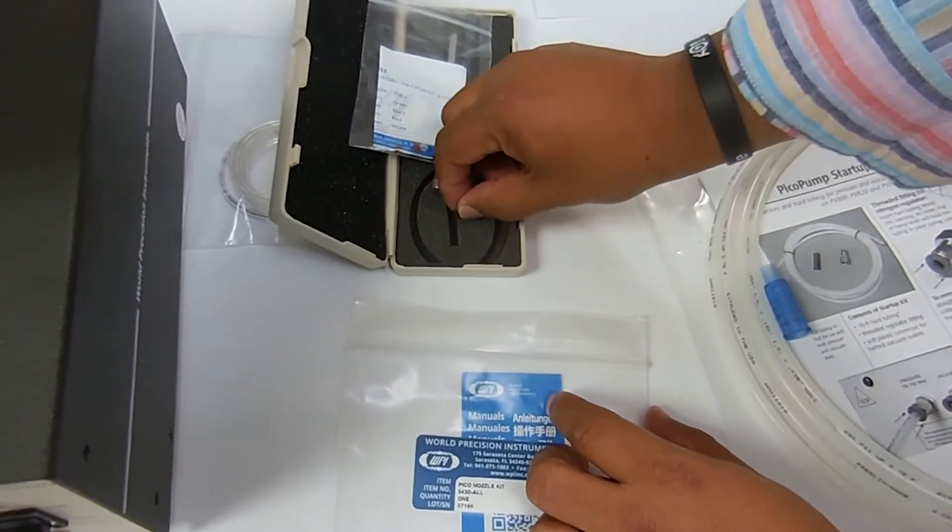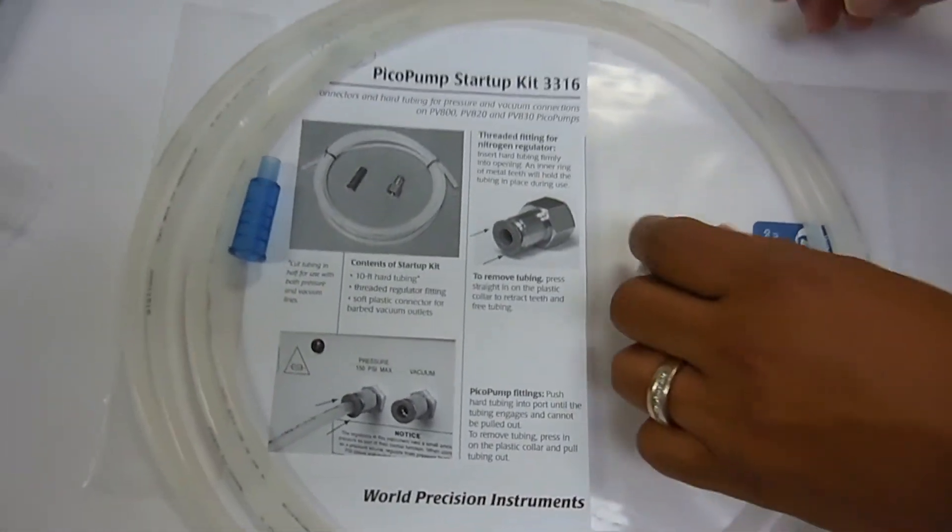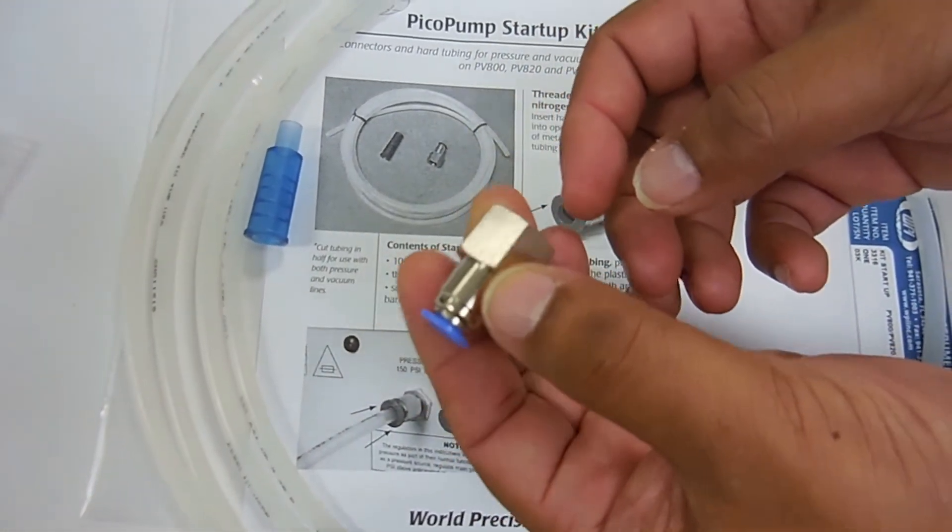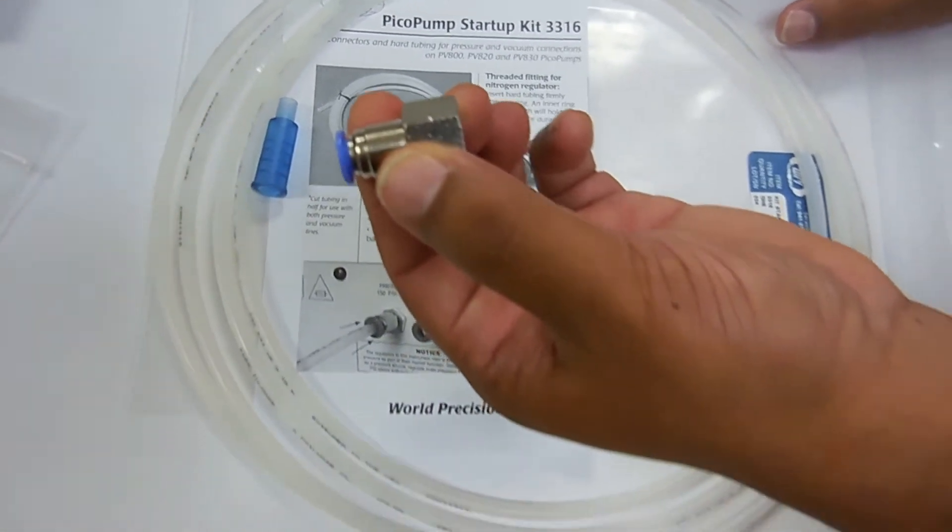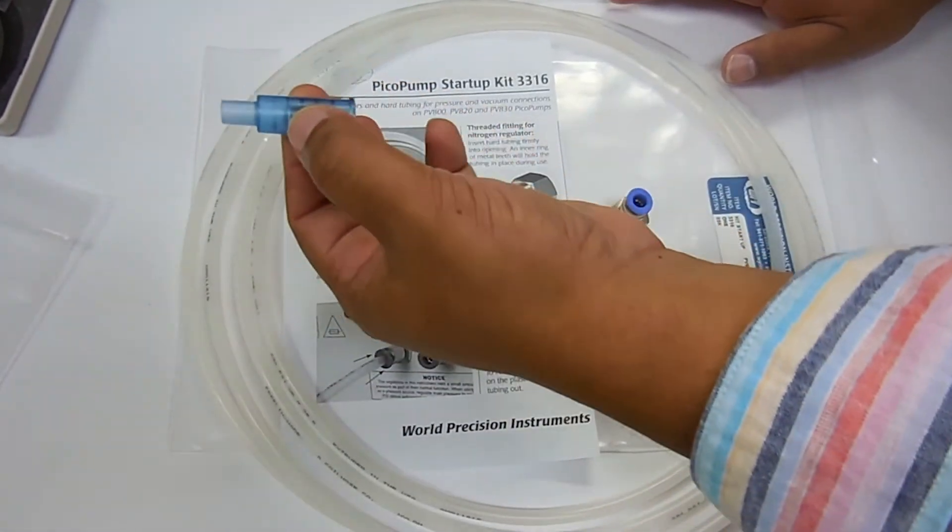The connection kit includes this adapter here to put onto your pressure source, your pressure tank. With that, you also receive another adapter for your vacuum source. This is only for your vacuum source.